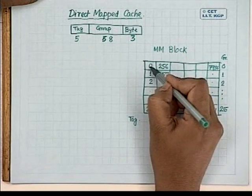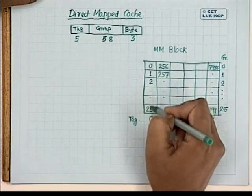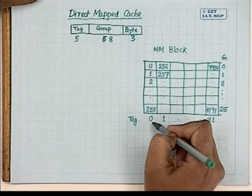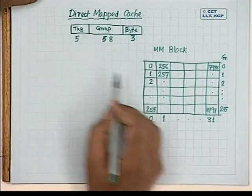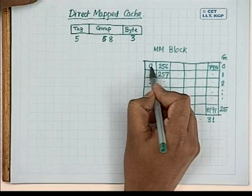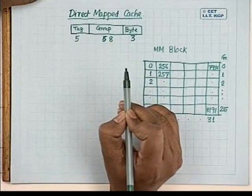Similarly, blocks 1 through 255 all belong to tag number 0. When the tag field is 0 and the group field is also 0, that identifies the 0th block in main memory. The 0th block contains 8 bytes, and which specific byte is required is specified by the byte number field in the address.